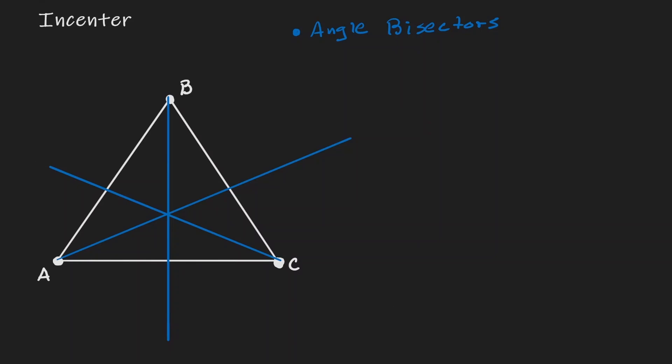If these lines are said to be angle bisectors, then let's label our diagram correctly. Therefore these two angles are congruent, those two angles are congruent, and these two angles are congruent.